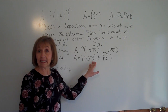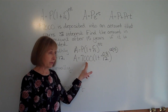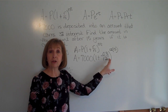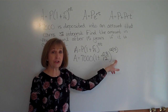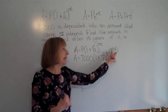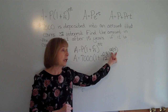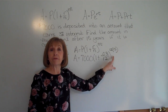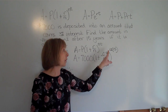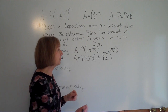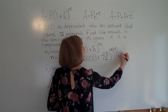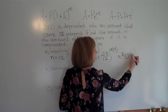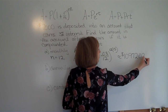To calculate this, key in 7,000 times, open parenthesis, 1 plus .03 divided by 12, close parenthesis, then raise it to the exponent. If your calculator stays in the exponent, go 12 times 15. Otherwise, use the caret key with parentheses around 12 times 15. The result is approximately $10,972.02.